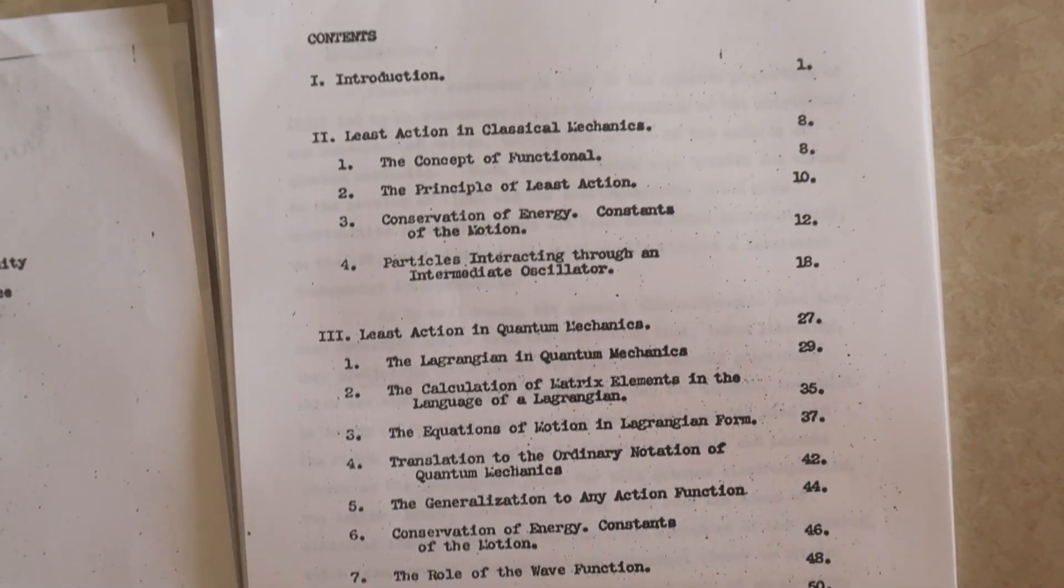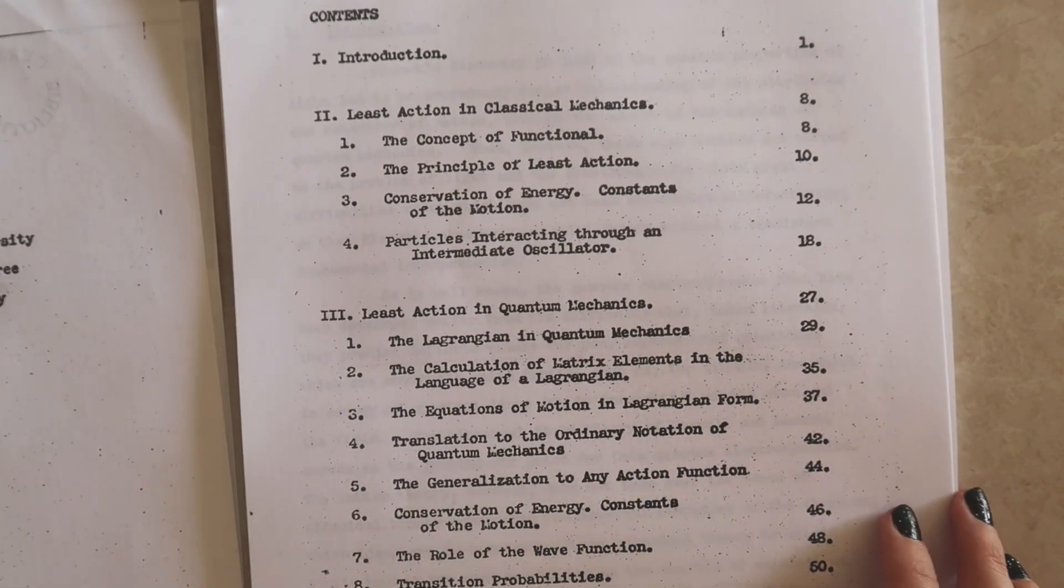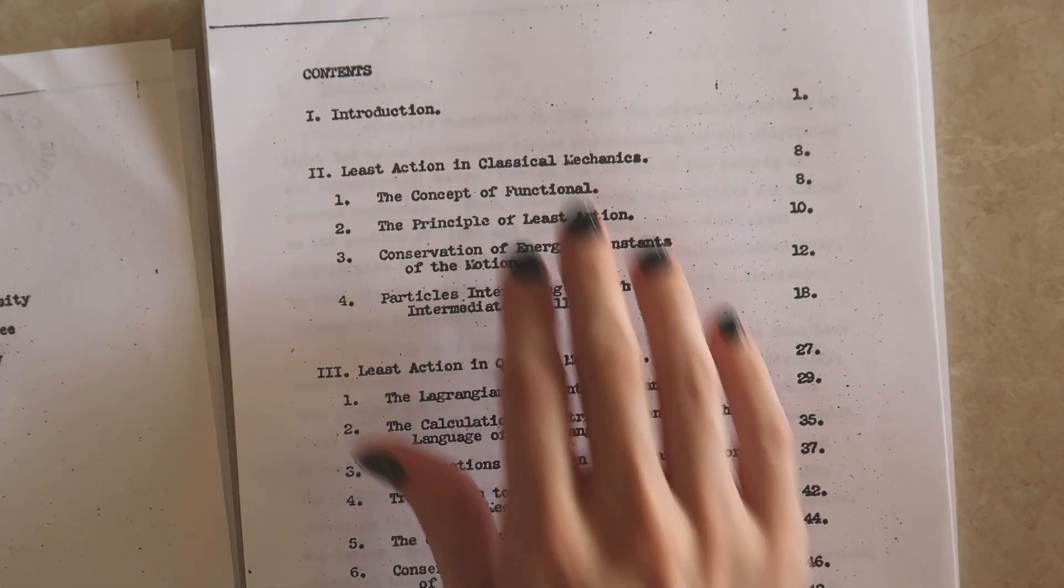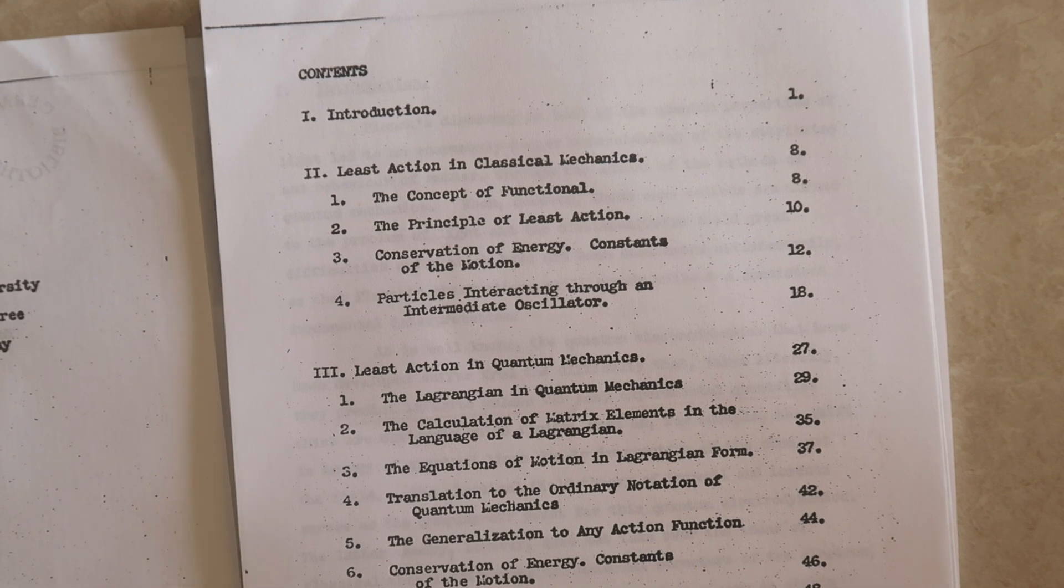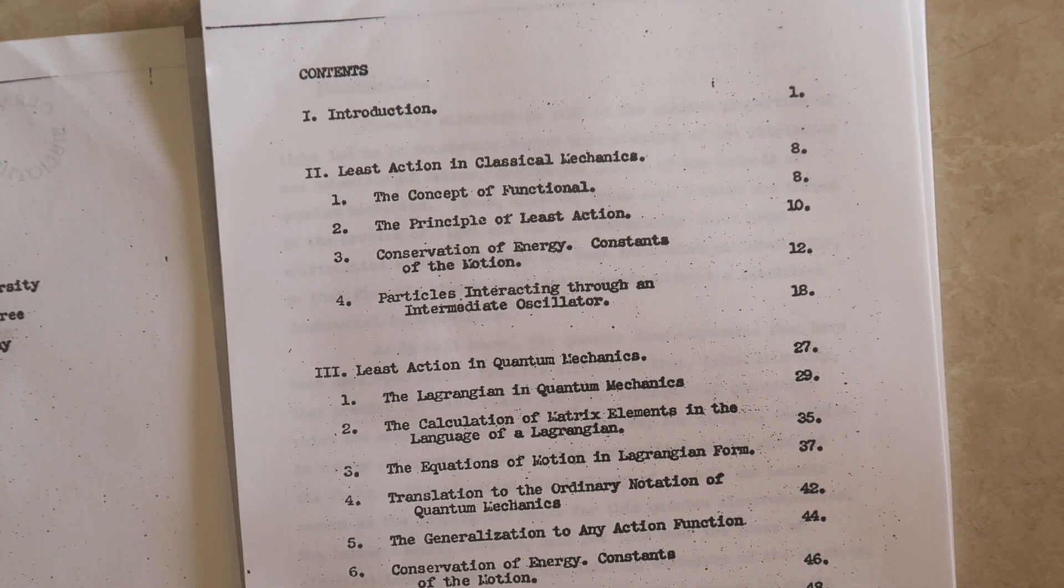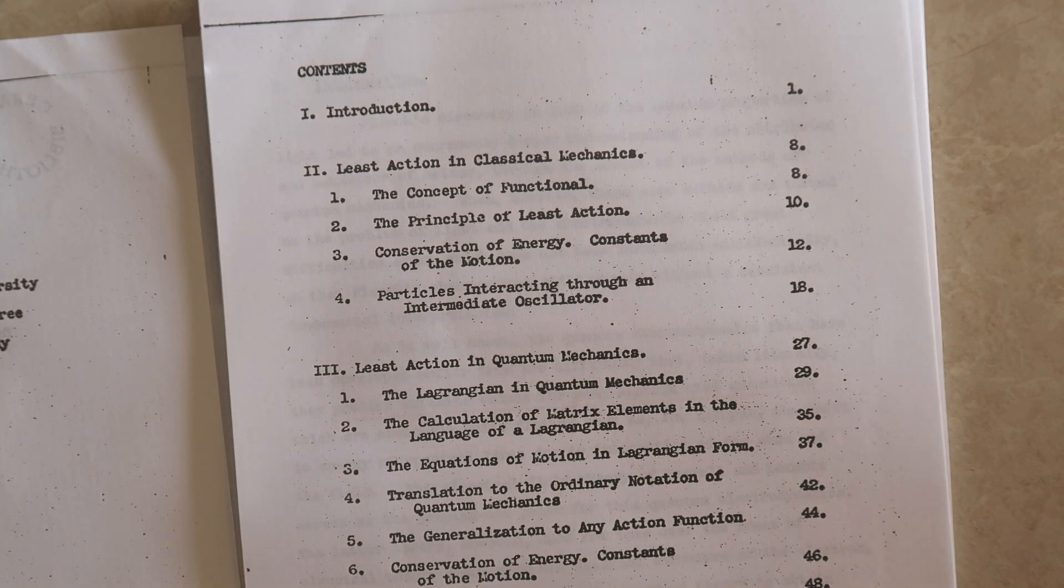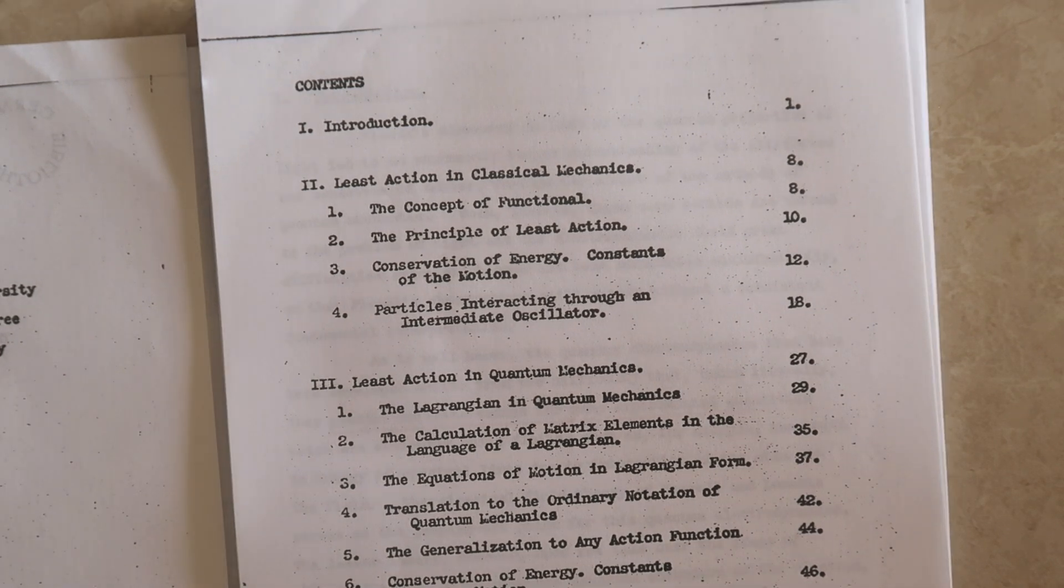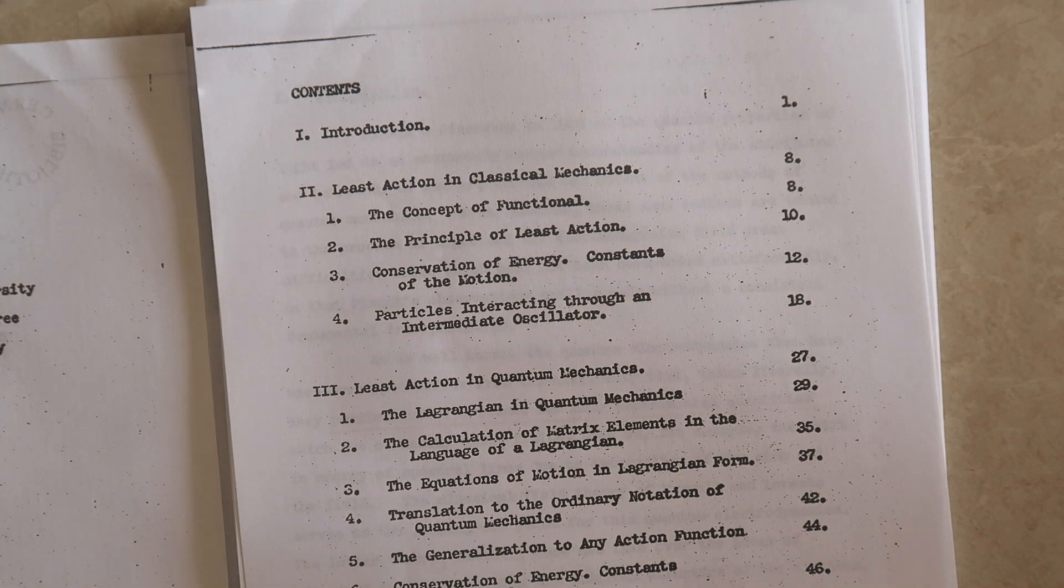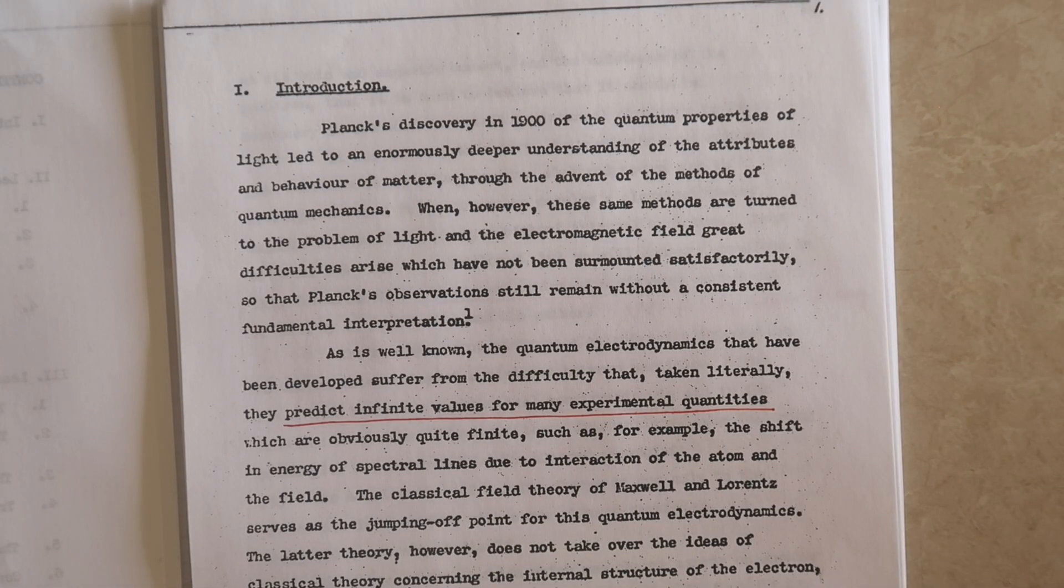Do note that some of the ideas that I'm going to talk about and that are discussed in this thesis, even some of the main motivating ideas, were later discarded as not being really that useful even by Feynman himself when he goes on to do a lot more work on this and to win his Nobel Prize. So it's not necessarily true that we need to do away with the concept of a field but it is what Feynman was trying to do in this thesis. So let's take a closer look.